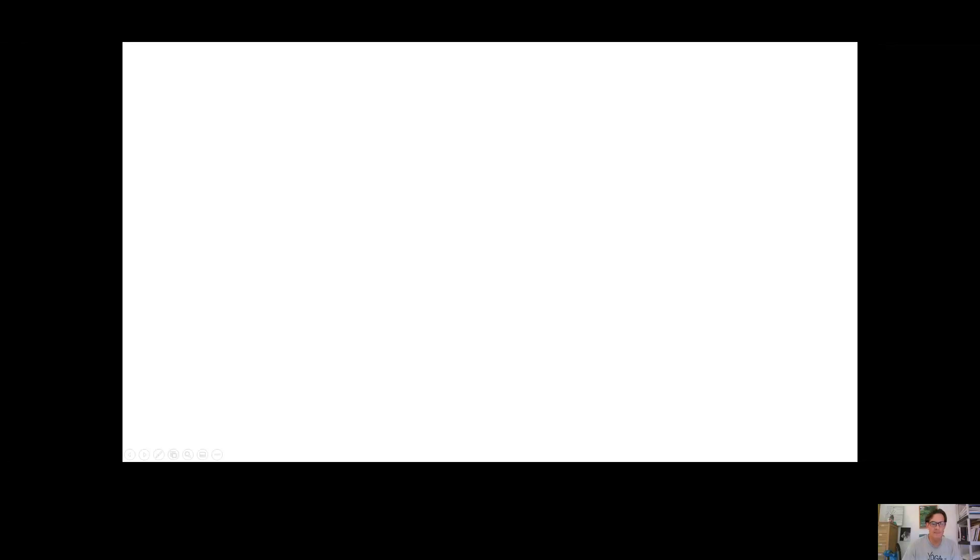Let me share a screen. So it should be just white at the moment, but we will start right away. Okay, so the way the survey was structured was each question sort of had two statements to it, a positive and a negative statement. And so we'll be able to see both results together.